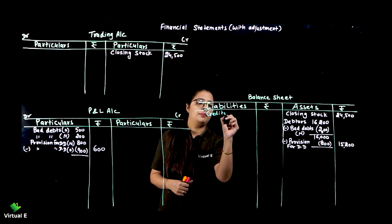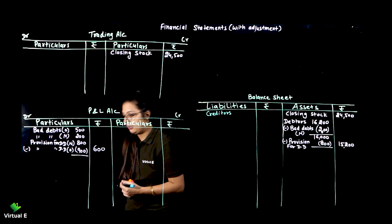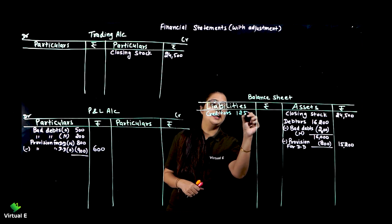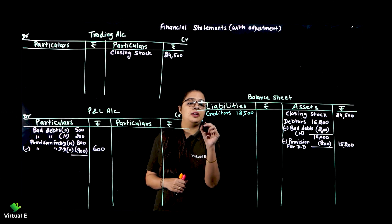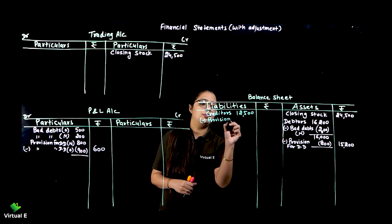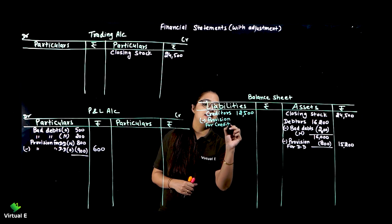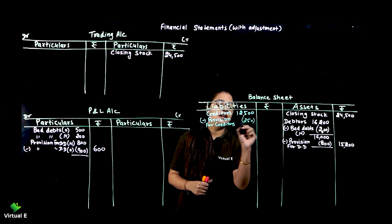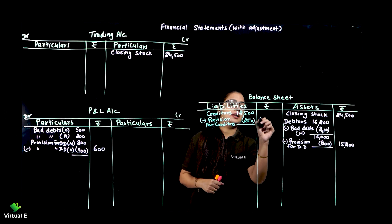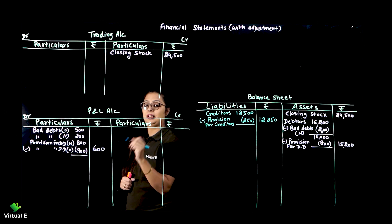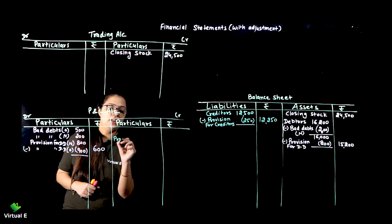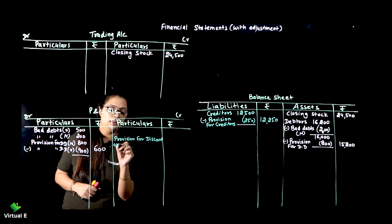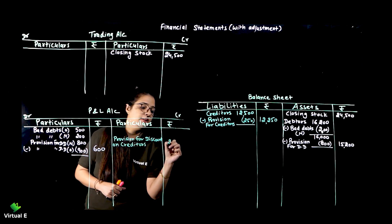Now we come to liability - creditors. When we give a discount to creditors, that is our gain. Creditors are 12,500, and we create a provision 2% for discount on creditors. 2% of 12,500 is 250. So creditors become 12,250, and we show provision for discount on creditors of 250.